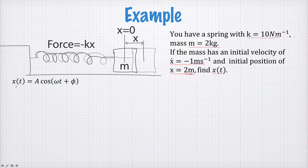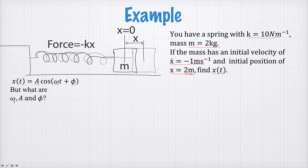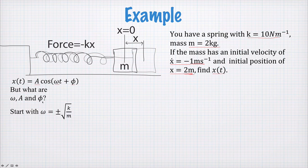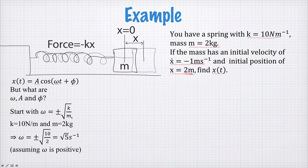Now we already know what this function looks like. It's just that we don't know the amplitude, the angular frequency, or the phase of this motion. But we know it takes this functional form here. So we have to find ω, A, and φ. Let's start with ω because we already know the equation for ω. It's k divided by m. We know k and m. So very quickly calculate that ω is equal to √5 s⁻¹. And we're assuming a positive ω in this case.